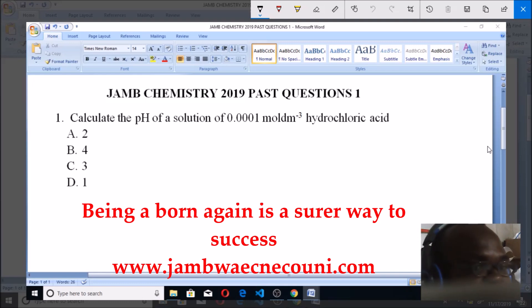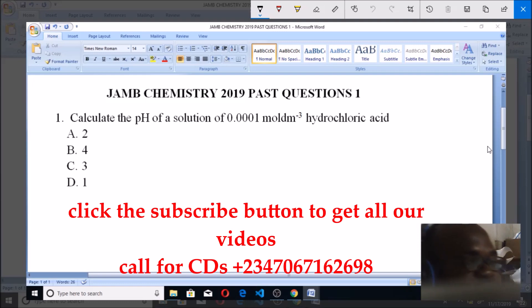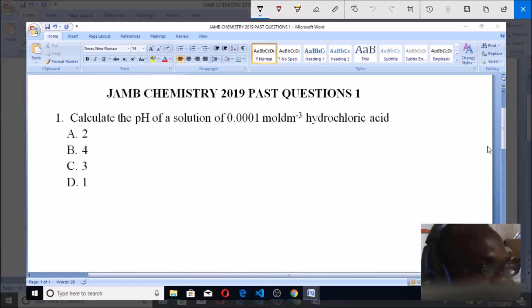Option A: 2, B: 4, C: 3, D: 1. So what is the pH of a solution of 0.0001 mol per dm³ hydrochloric acid? We know that pH is the logarithm of the concentration of the hydronium ion. That's what we're going to be solving this with.